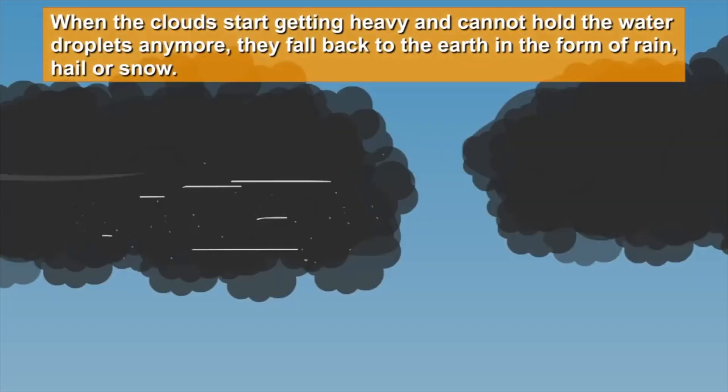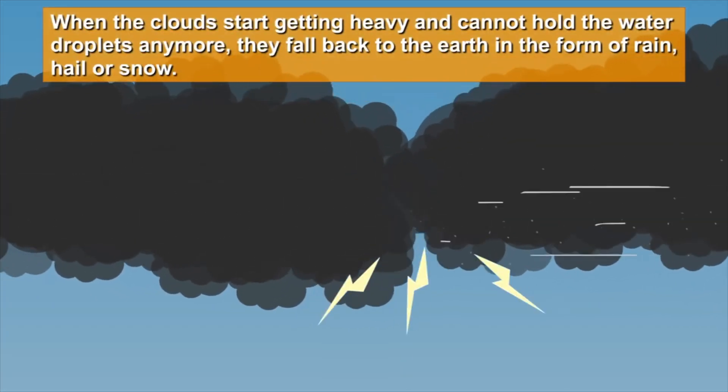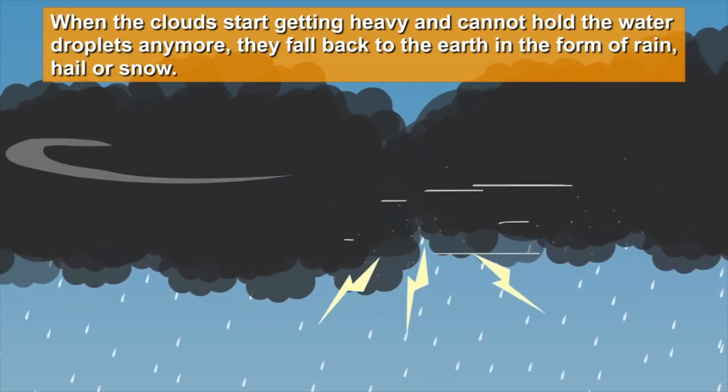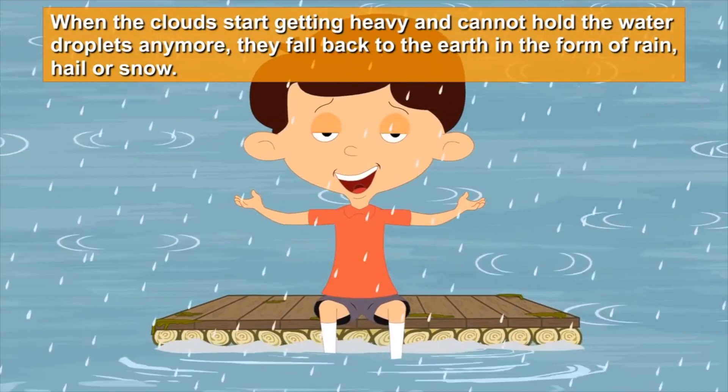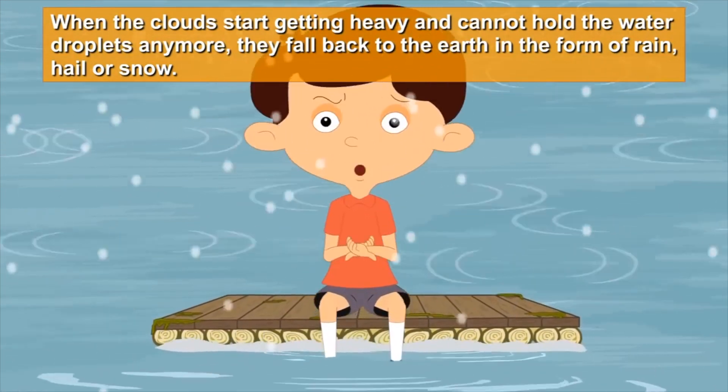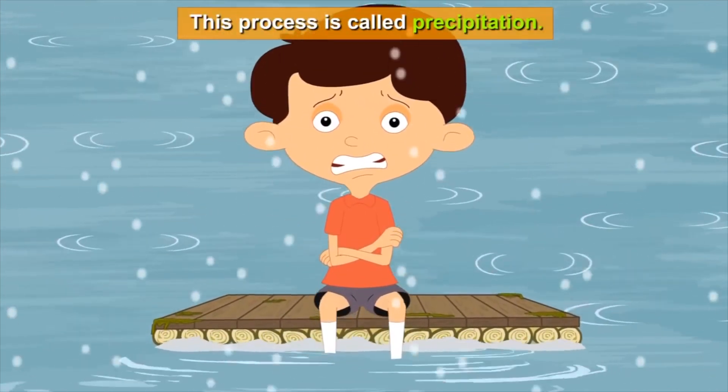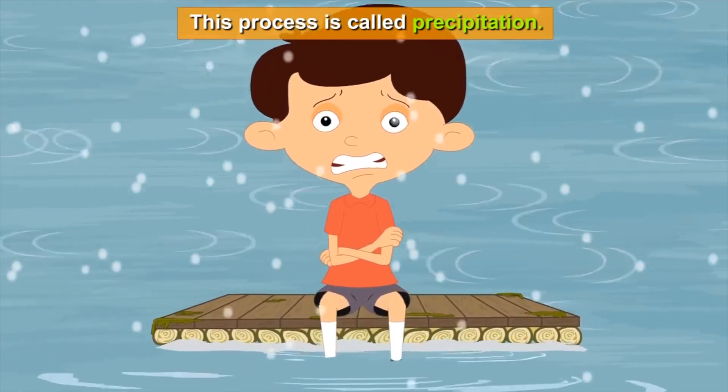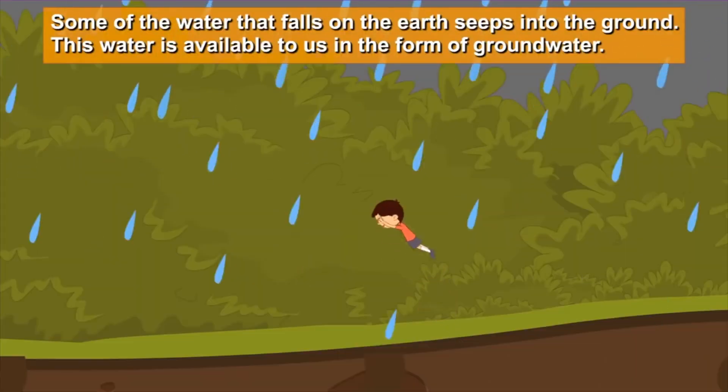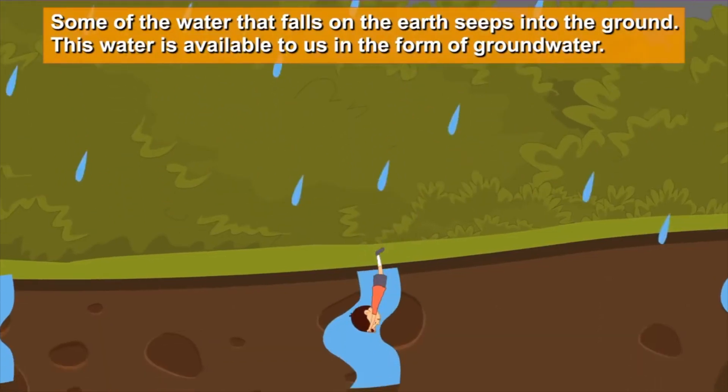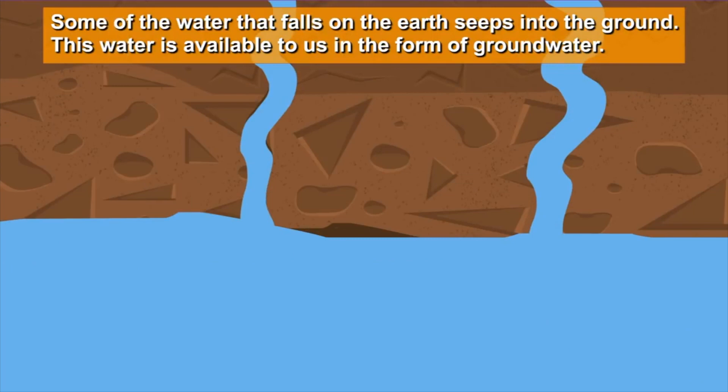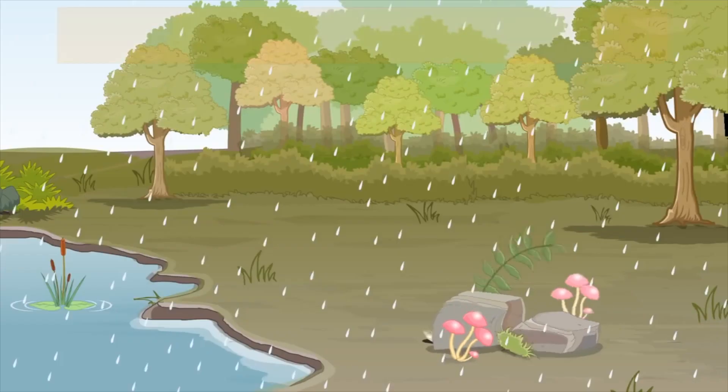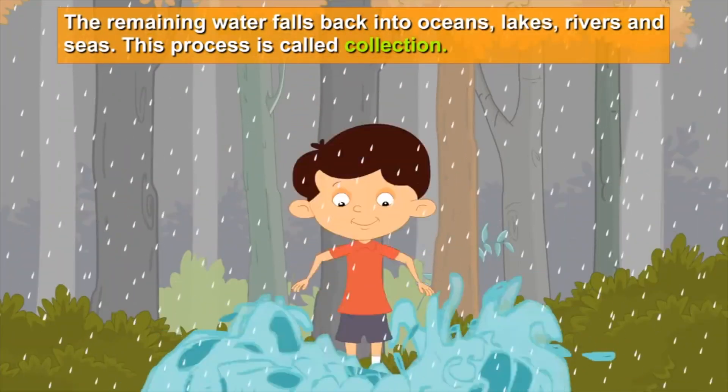When the clouds start getting heavy and cannot hold the water droplets anymore, they fall back to the earth in the form of rain, hail, or snow. This process is called precipitation. Some of the water that falls on the earth seeps into the ground. This water is available to us in the form of ground water.